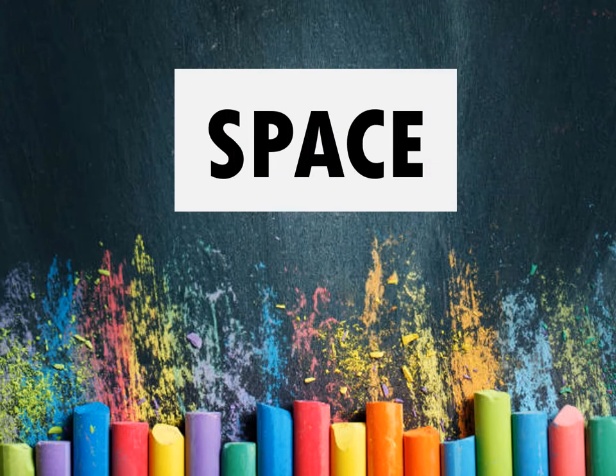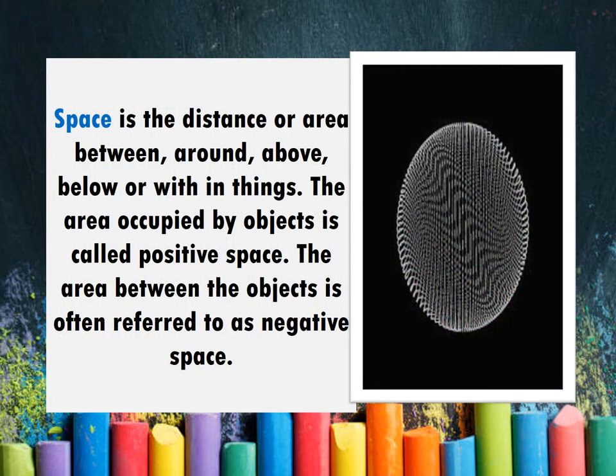Next, we have space. Space is the distance or area between, around, above, below, or within things. The area occupied by the object is called positive space, and the area between the object is often referred to as negative space.